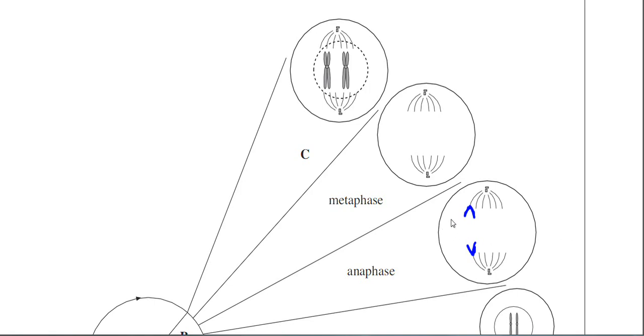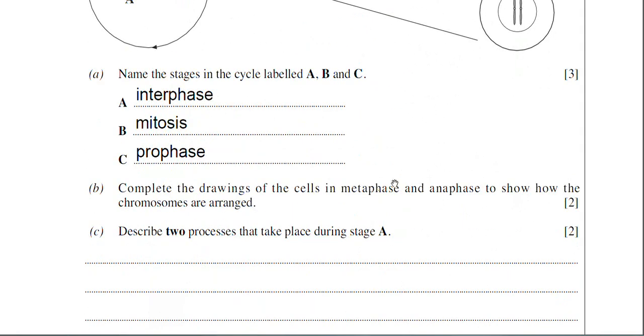You can see that they've been pulled apart and they've been dragged to the opposite poles. And that's why the chromatids have that V-shaped appearance. It's because they're being dragged, or pulled, by the spindle fibre which is attached to the centromere. So I can draw in the other pair of chromatids. Again, as a V-like structure. And that would be an acceptable answer there for anaphase. So that's part B, two marks for that one.